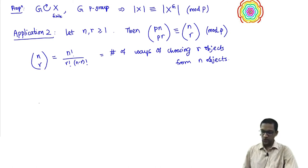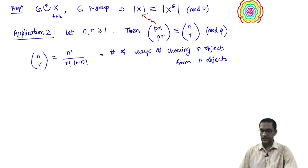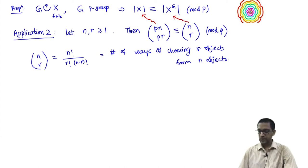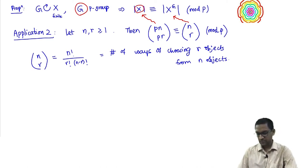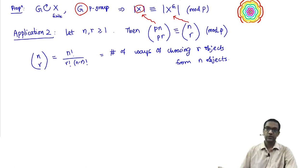Let us prove this as an instance of the fixed point principle. We will construct a set X whose cardinality is the left-hand side pn choose pr, and we will construct a p-group action on it such that the set of fixed points gives you the right-hand side n choose r. We need to manufacture a group G and a set X such that its cardinality is pn choose pr, then hope that the fixed point set turns out to be the right-hand side.